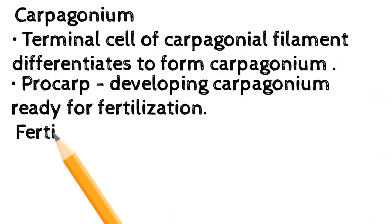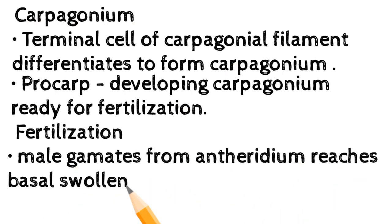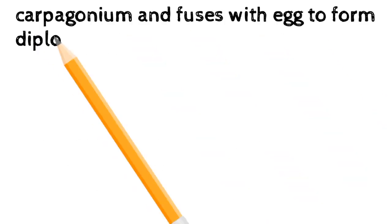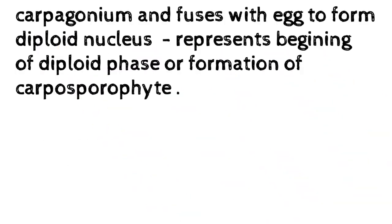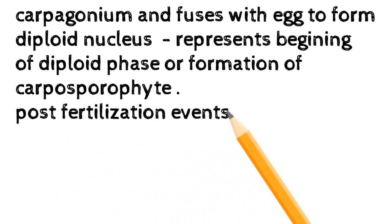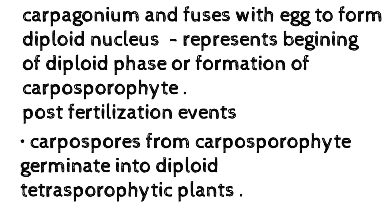The terminal cell of the carpogonial filament differentiates to form the carpogonium — a procarp — developing ready for fertilization. During fertilization, the male gamete from the antheridium reaches the basal swollen portion of the carpogonium and fuses with the egg to form a diploid nucleus, representing the beginning of the diploid phase and the formation of the carposporophyte.